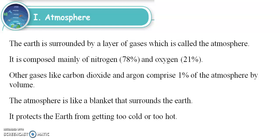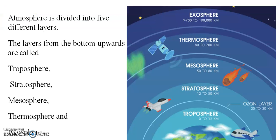The atmosphere is like a blanket. The atmosphere is divided into 5 different layers: troposphere, stratosphere, mesosphere, thermosphere, and exosphere.